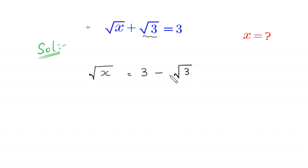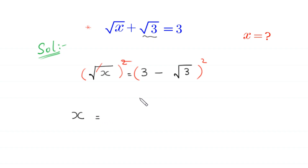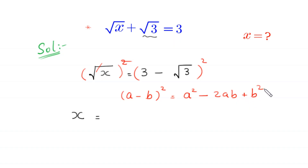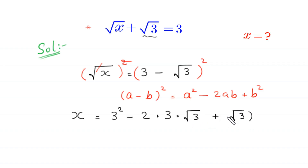From here we take the square of both sides, so the square will cancel with the square root on the left-hand side. We apply the algebraic identity: (a minus b) squared equals a squared minus 2ab plus b squared. So (3 minus root 3) squared becomes 3 squared minus 2 times 3 times root 3 plus root 3 squared.